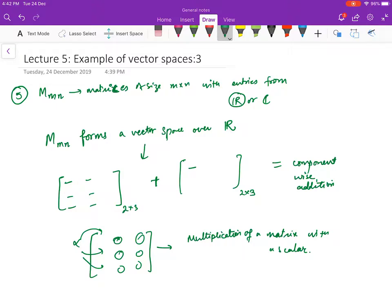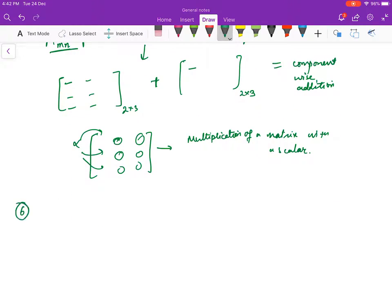With these two operations, Mmn forms a vector space over R, C, or any other field F from which the entries are taken. The last example is function space, F(X).